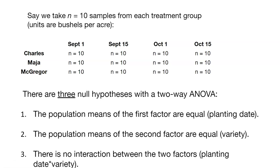The third important hypothesis we test in the two-way analysis of variance is that there is no interaction between the two factors. That is to say, if we look at planting dates and varieties, there's nothing unusual going on with the variety that we plant and the date we plant it. Some varieties might be better to plant later in the fall compared to other varieties that need to be planted earlier. With natural resources data, agricultural data, or anything with living organisms, there are often interactions between different factors.